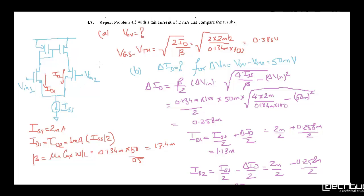What is the overdrive? Overdrive will increase because the current requirement is more. We know the formula: under root of 2ID by beta. ID is ISS by 2 and beta is 0.134mA times W by L. W/L we are taking from problem 5, which is 100. W was 50 and L was 0.5. When we solve it, the overdrive is 0.386 volts.